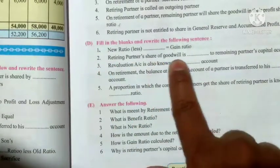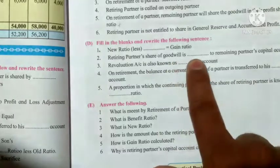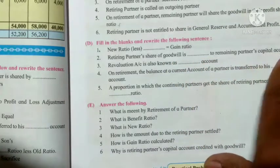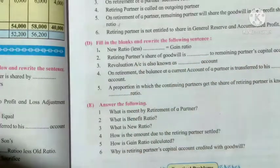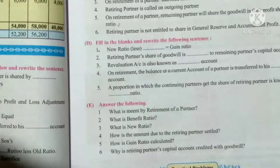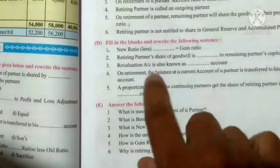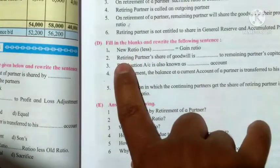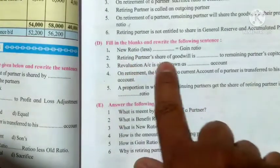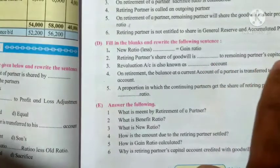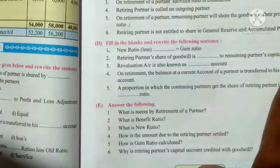Number 2: retiring partner's share of goodwill is debited to remaining partners' capital account.